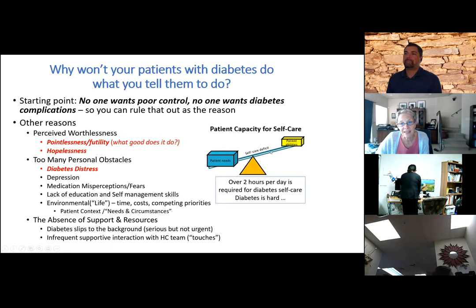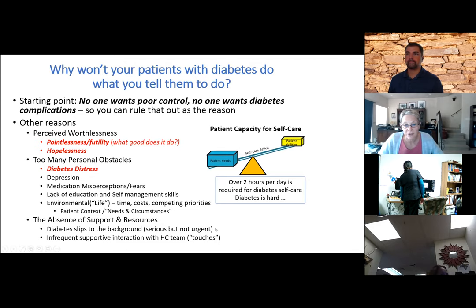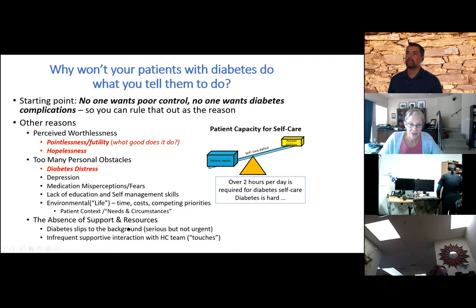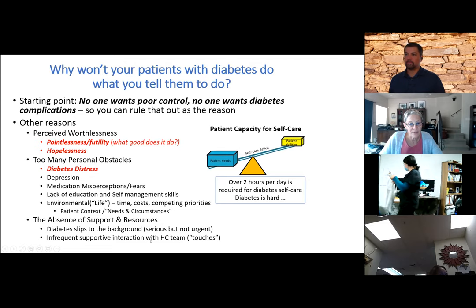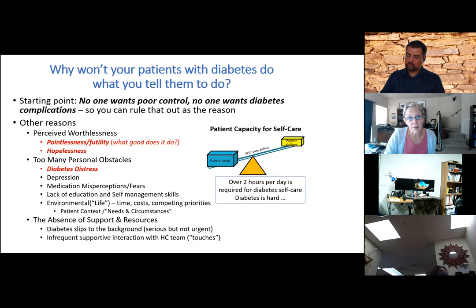We really need to take self-care deficit into consideration when we're asking people to do things for their diabetes. Then there's the lack of support. Diabetes is life-threatening, but it's not immediately life-threatening. People take it differently than a diagnosis of cancer, so it's easy for it to slip behind them. They put other more urgent needs — like getting their kids to school — in front of the diabetes. And the lack of frequent interaction with their healthcare team, what we call 'touches.' Research shows that even little text messages from the healthcare team can help people stay on top of diabetes.